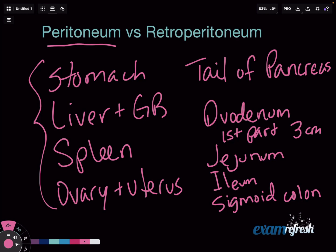So those are our peritoneal organs. The big ones you need to know that people get confused on would be the spleen and tail of the pancreas for sure — that one you're going to be asked about guaranteed — and then also the uterus and ovaries.